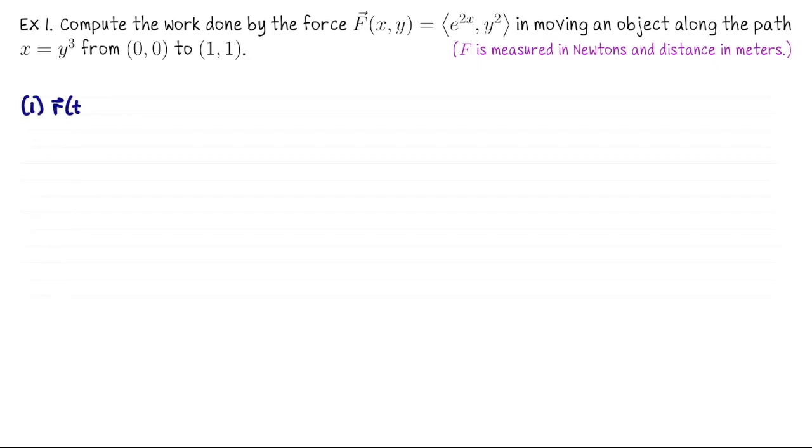The first step is to parametrize this path. Here x is given as a function of y, so let's let y be t so that x is t³. And then for t values, notice y is going from 0 to 1, so t will go from 0 to 1.